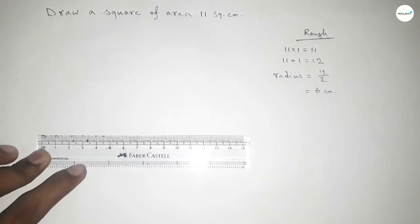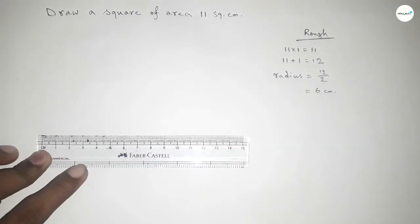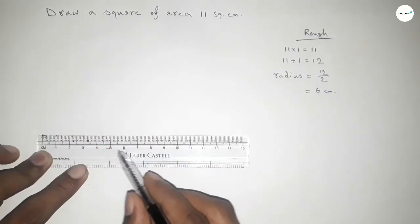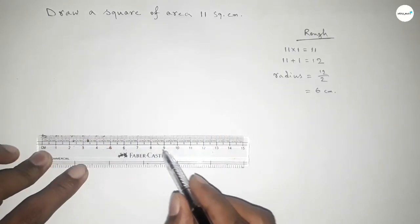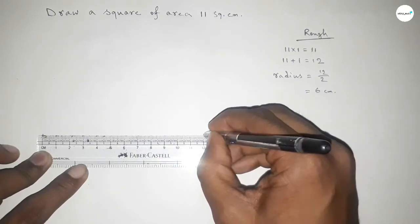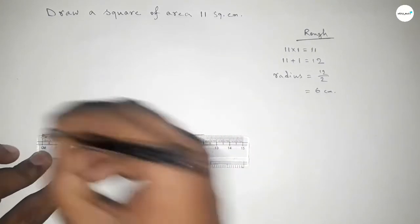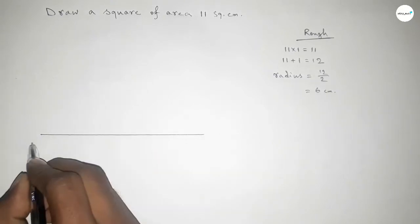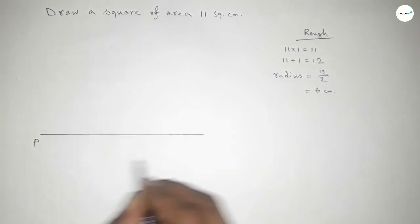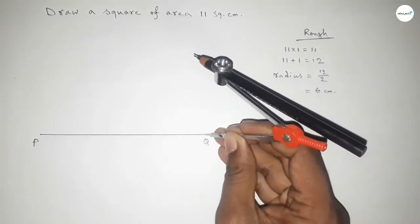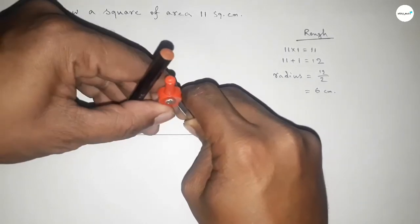First, we have to draw a line of length 12 centimeters. Drawing the line here — 12 centimeters — and labeling the endpoints P and Q, so PQ = 12 centimeters. Next, we have to bisect the line PQ.